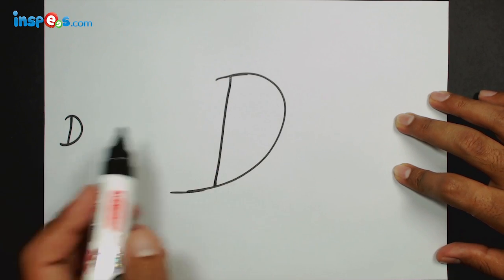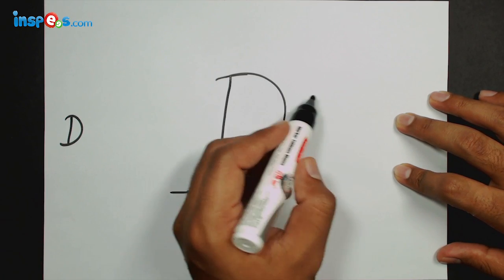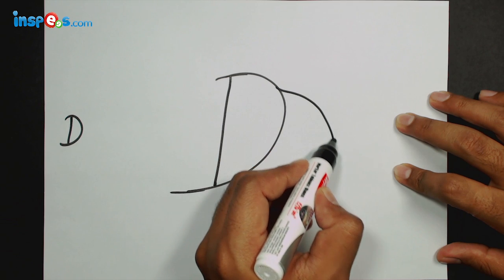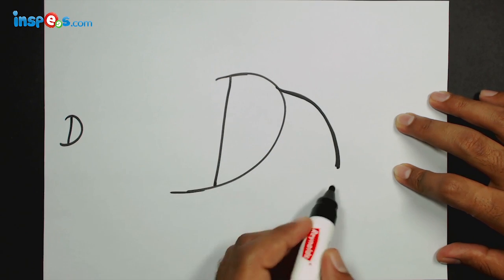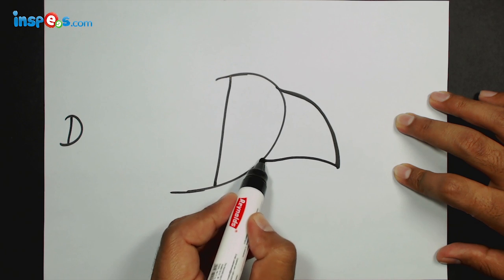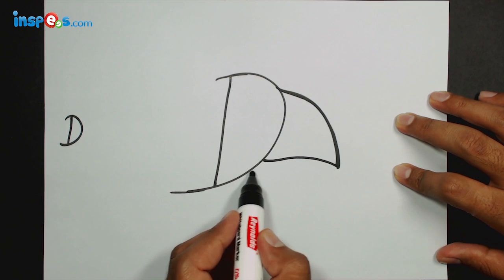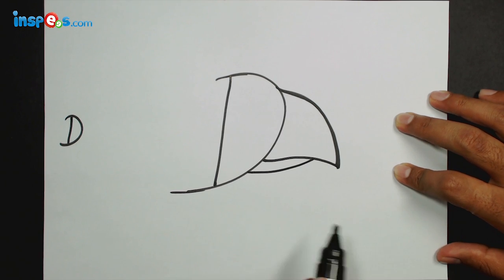Now we need the beak, we need to add the beak. So starting from here again I'll make the beak like this and yeah like this. Now you can add the down one also.